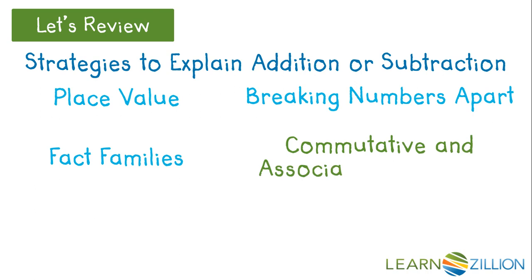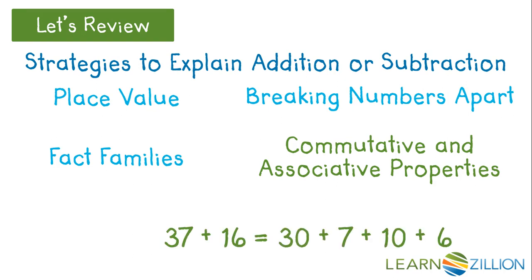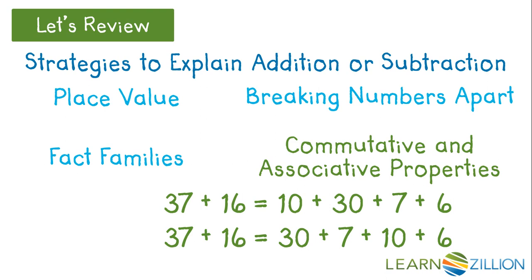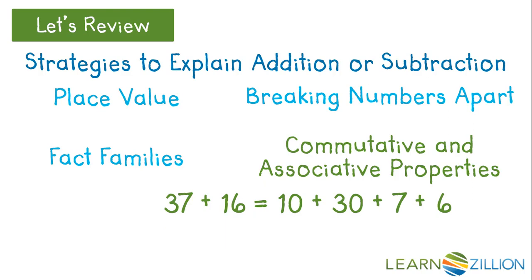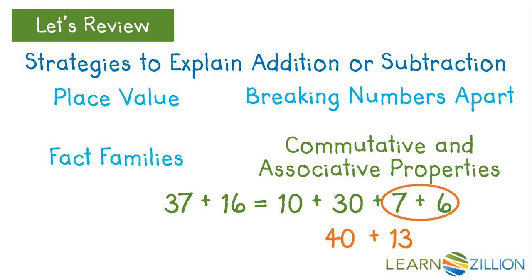A final strategy is to use the commutative and associative properties of addition. The commutative property says that we can add numbers in any order, so we could change 30 plus 7 plus 10 plus 6 to 10 plus 30 plus 7 plus 6. The associative property says that we can group numbers when we add, so we could group the 10 plus 30 is 40, and 7 plus 6 is 13.